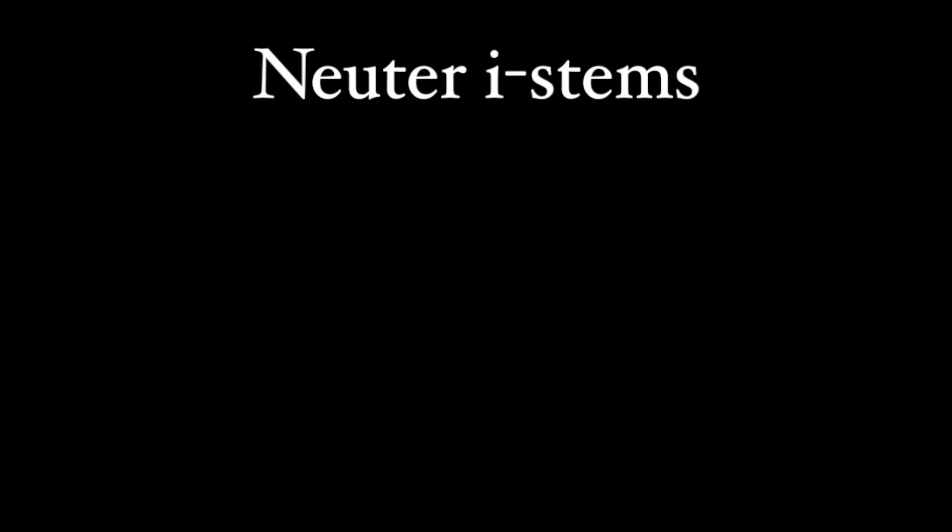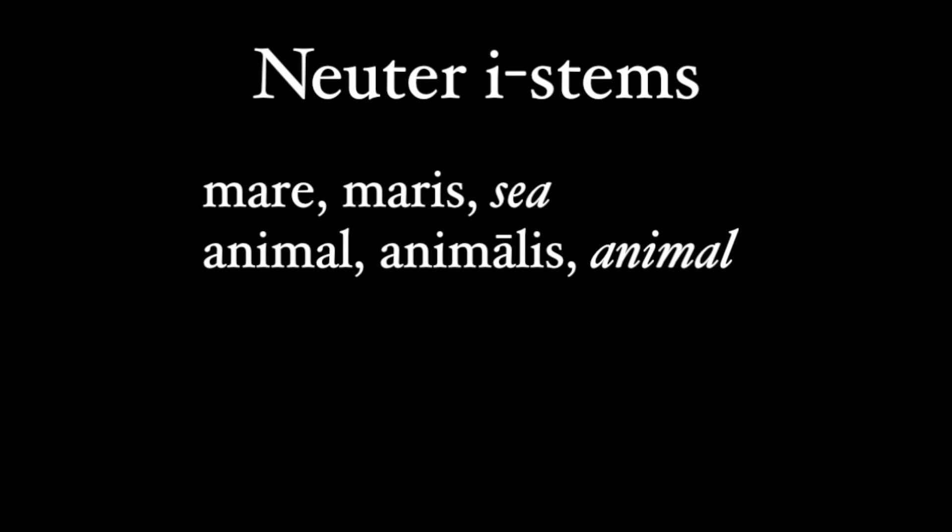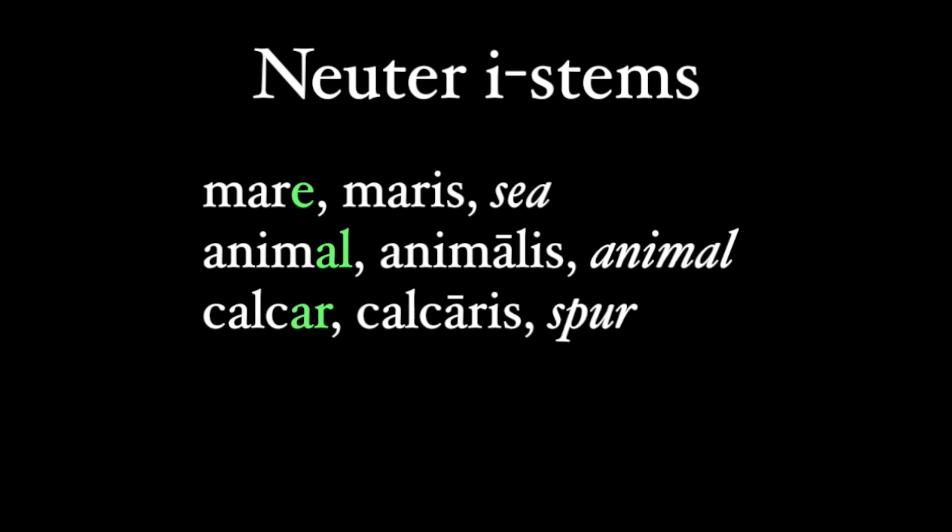There's another class of neuters in the third declension: the i-stem neuters. Words like mare or animal. How can you figure out if a word is one of these i-stems? If it's neuter, it must have a nominative ending in -e, like mare, or -al, like animal, or -ar, like calcar, which is Latin for 'spur.'